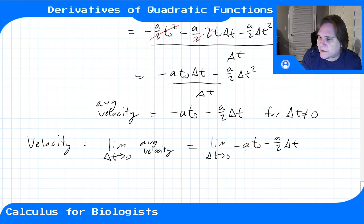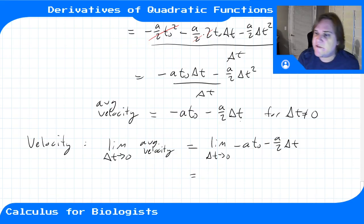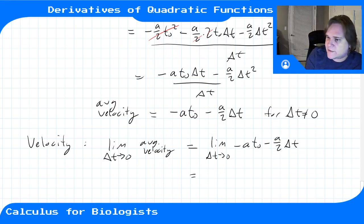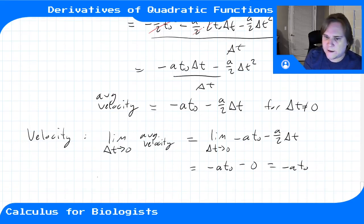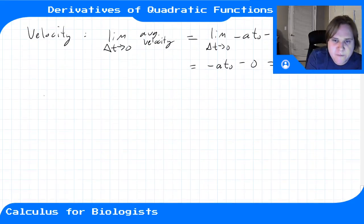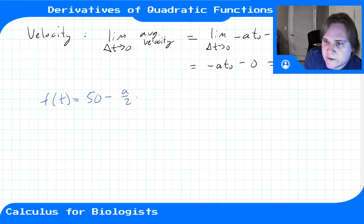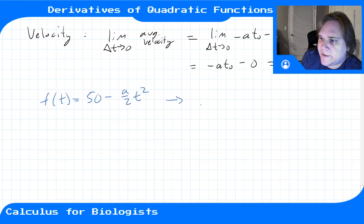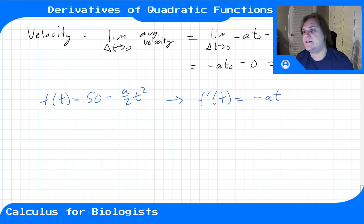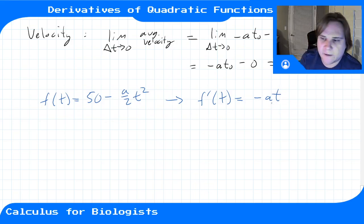Plugging in delta t = 0 gives us -a·t₀. So for f(t) = 50 - (a/2)t², the derivative f'(t) = -a·t. This was computed at a point t₀, so in general for time t the derivative function is -at.